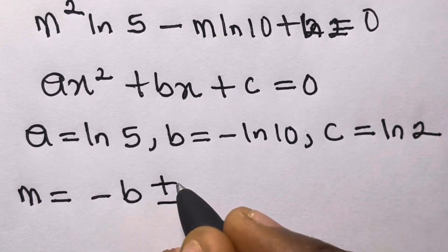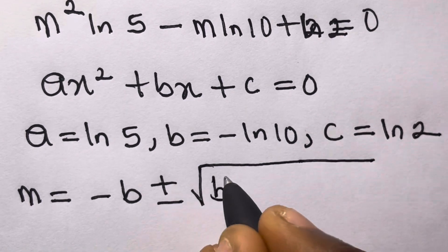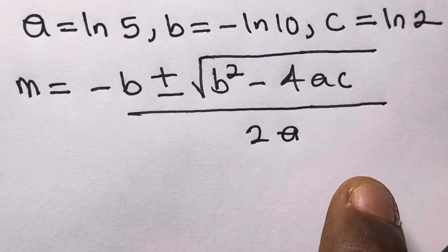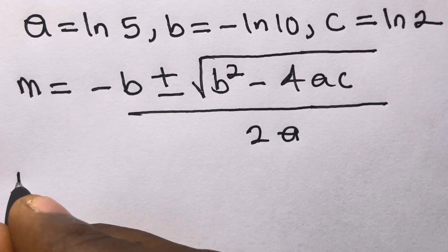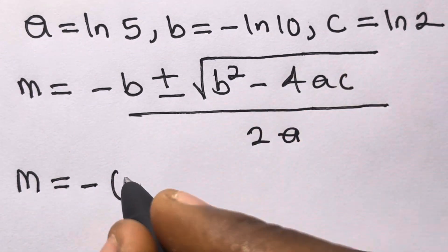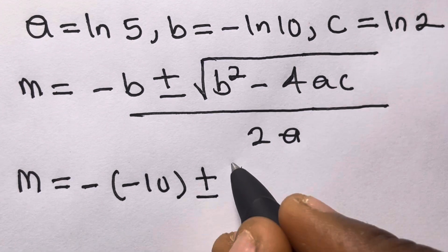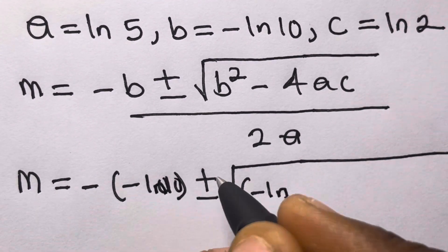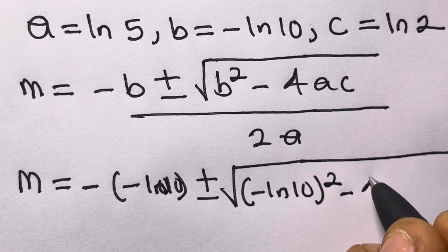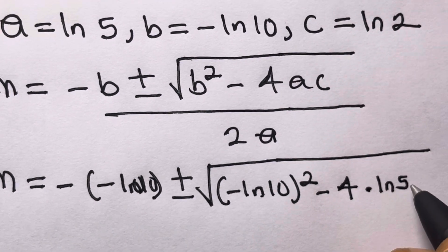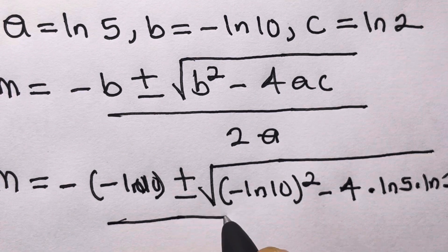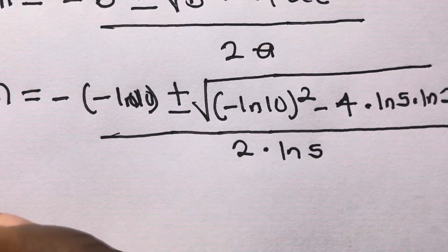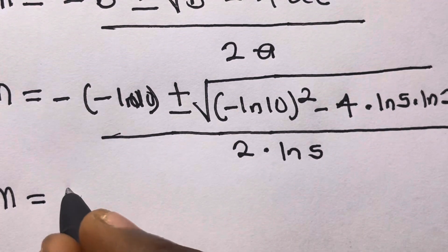Using the quadratic formula: m equals minus b plus or minus the square root of b² minus 4ac, all divided by 2a. Substituting in, we have m equals minus(−ln10) plus or minus the square root of (−ln10)² minus 4·ln5·ln2, divided by 2·ln5.